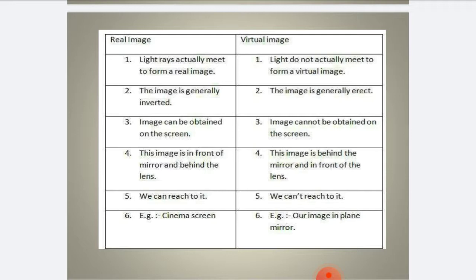A virtual image cannot be obtained on the screen. A real image is in front of the mirror and behind the lens. A virtual image is behind the mirror and in front of the lens. We can reach a real image. For a virtual image, we cannot reach it. For example, cinema screen shows a real image, while a plane mirror shows a virtual image.